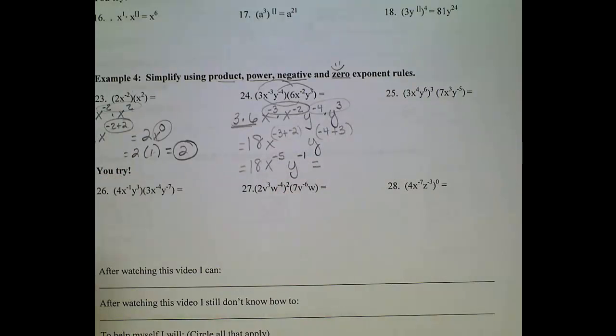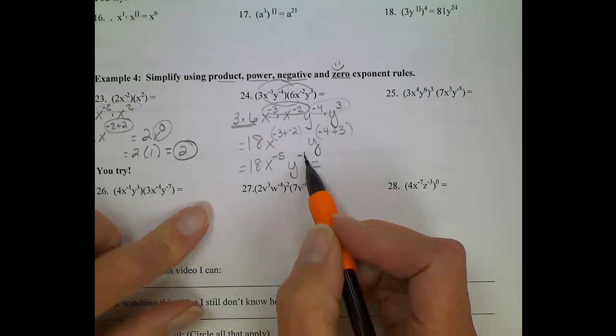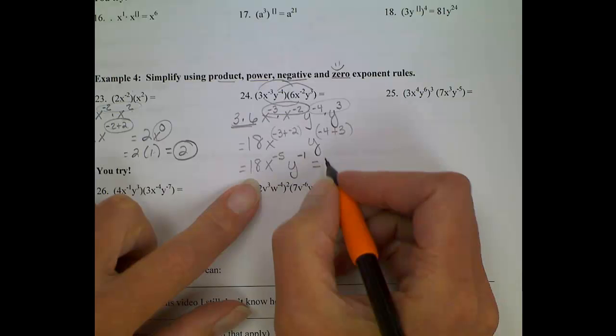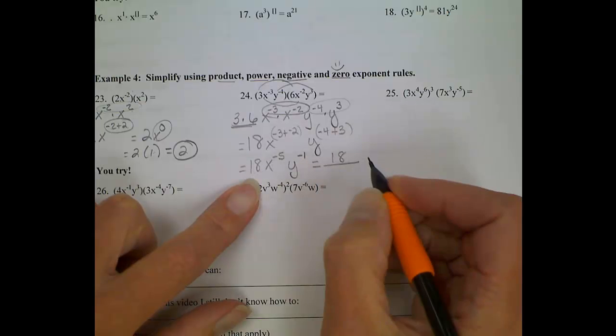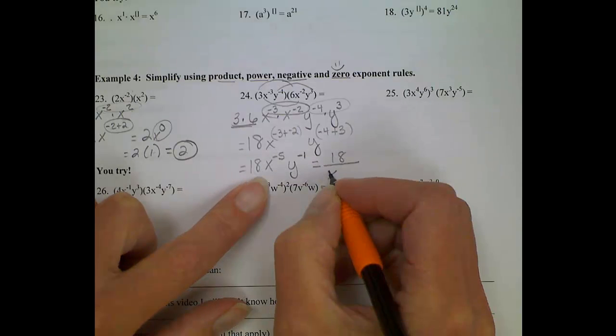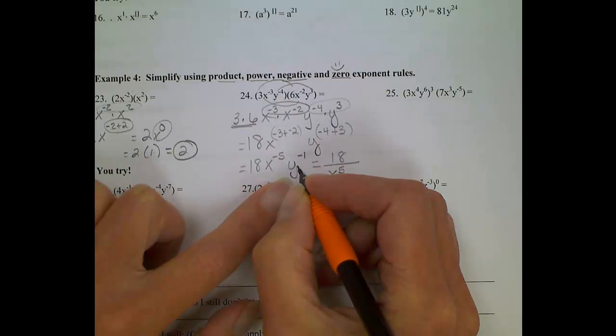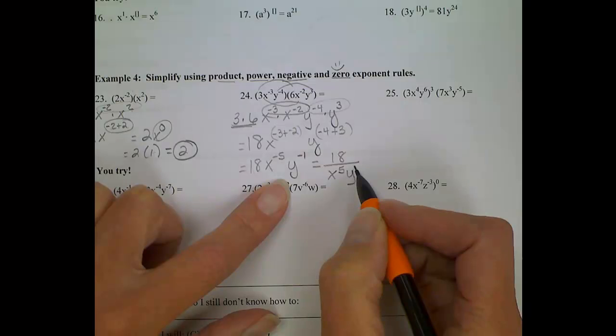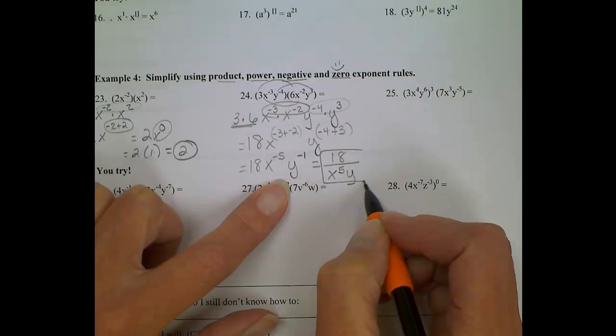You are not allowed to keep negative exponents in your final answers, so our final answer will be an 18, which will stay in the numerator. We'll have to move x to the fifth to the denominator, and y to the first also to the denominator, and you can put the one there or not. Okay, final, final.